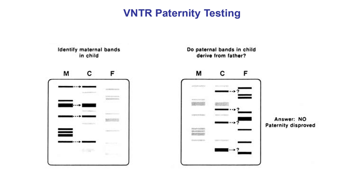Here's a second example where the father is excluded. Again we compare the child's pattern to the mother's pattern — we generally always know who the mother is because there's a record of her giving birth. We can explain half of the bands in the child's profile by looking at the mother's. But when we compare the remaining bands — the ones that did not come from the mother — they don't match the alleged father. So the presumed father in this case is not actually the father.